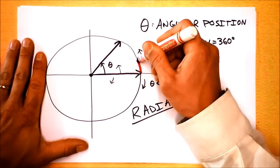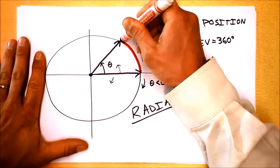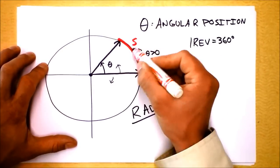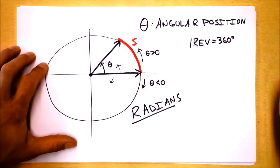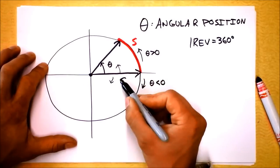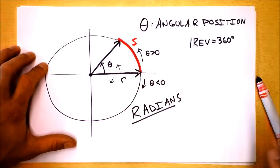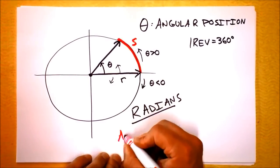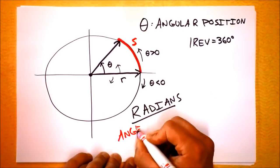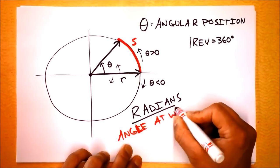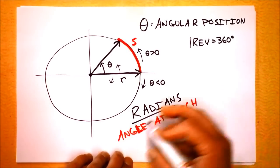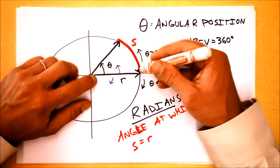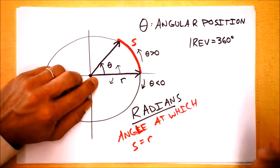When the arc length of the tip of the arrow, that is a letter that we're going to represent by s. When the arc length is equal to the radius of the circle, then the angle that we've gone is equal to one radian. So let's see. The radian is the angle at which s equals r. When the arc length traveled by the tip of the arrow is equal to the radius, that's a radian.